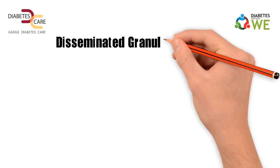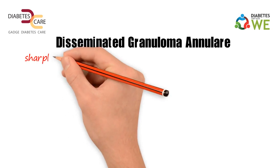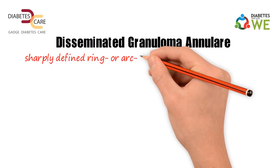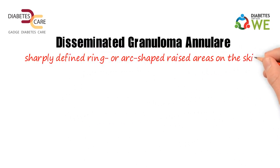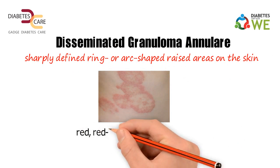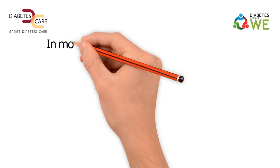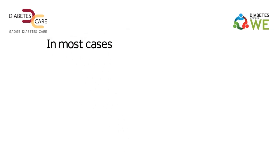Disseminated granuloma annulare: the person develops sharply defined ring or arc-shaped raised areas on the skin. They can be red, red-brown, or skin-colored.